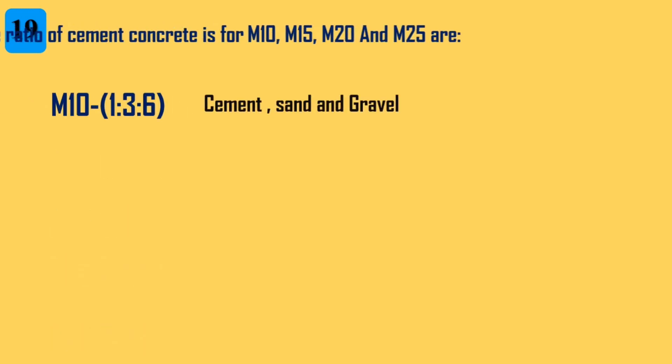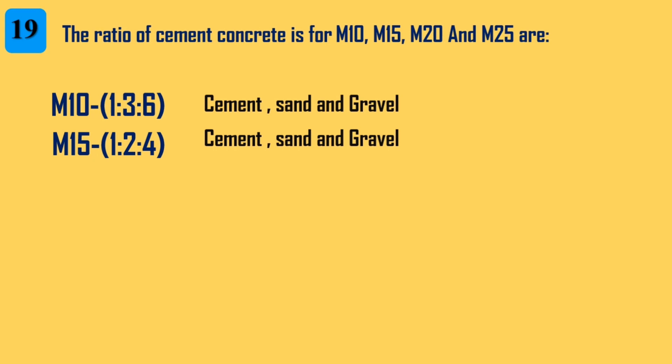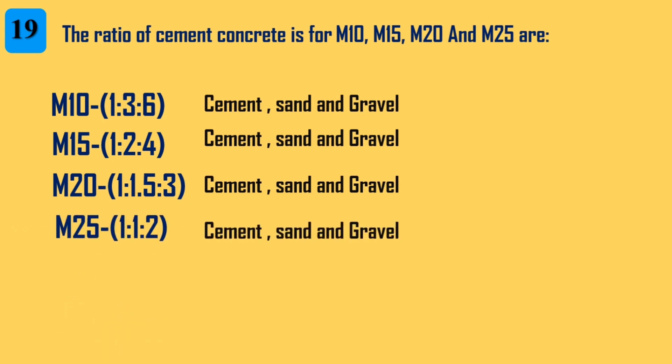19. The cement-concrete ratios for M10, M15, M20, and M25 are: M10 is 1:3:6 — 1 part cement, 3 parts sand, 6 parts gravel. M15 is 1:2:4 — 1 part cement, 2 parts sand, 4 parts gravel. M20 is 1:1.5:3 — 1 part cement, 1.5 parts sand, 3 parts gravel. M25 is 1:1:2 — 1 part cement, 1 part sand, 2 parts gravel.